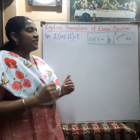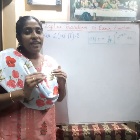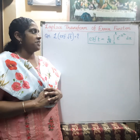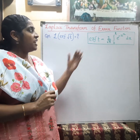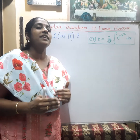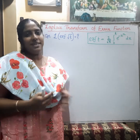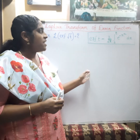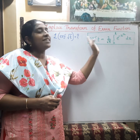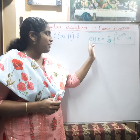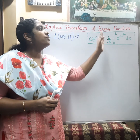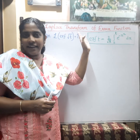In this video, we can see the Laplace transform of error function. Error function is a special type of function that usually comes in the theory of probability. It is defined as (2/√π) times the integral from 0 to t of e raised to minus x squared dx. So, error function of t is equal to (2/√π) times the integral from 0 to t of e raised to minus x squared dx.